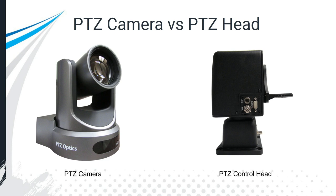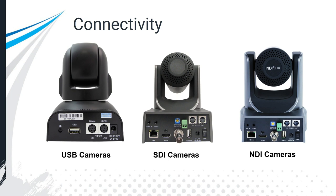At a high level you have a camera with pan tilt zoom controls and robotics built into the camera, but you also have the option to use a pan tilt zoom control head. What this does is allow you to put an over-the-shoulder camcorder style camera on this head and make it robotically and remotely controllable. So you can buy a brand new camera with all of this built in, or you can buy a PTZ camera head and turn an older camera into a pan tilt zoom setup.